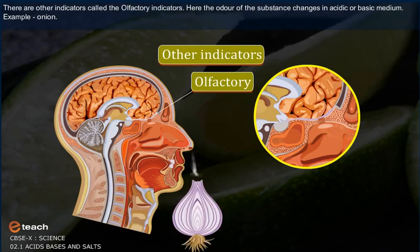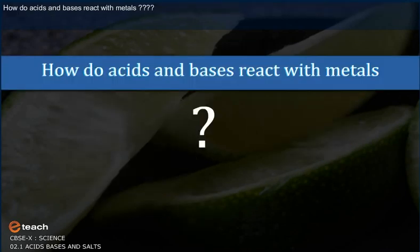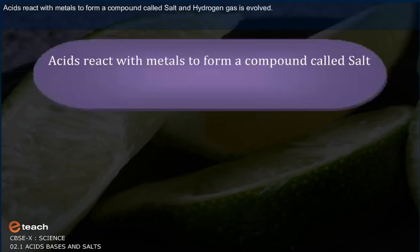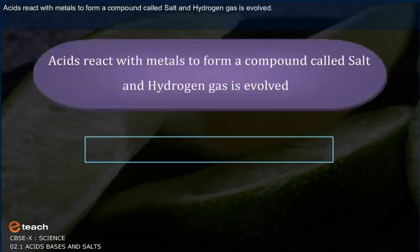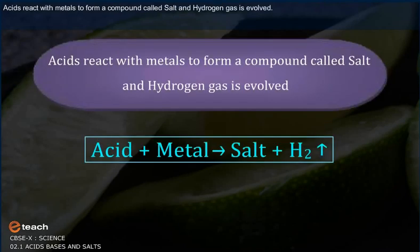There are other indicators called olfactory indicators, where the odor of the substance changes in acidic or basic media — for example, onion. Acids react with metals to form a compound called salt, and hydrogen gas is evolved.